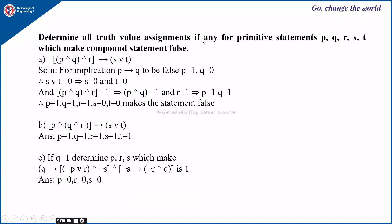Determine all truth value assignments, if any, for the primitive statements p, q, r, s, t which make the compound statement false. The compound statement is an implication, and an implication is false only when the premise is true and the conclusion is false. This indicates that p implies q is to be false when p equals 1 and q equals 0. Therefore s or t is false, which implies s is 0 as well as t is 0.